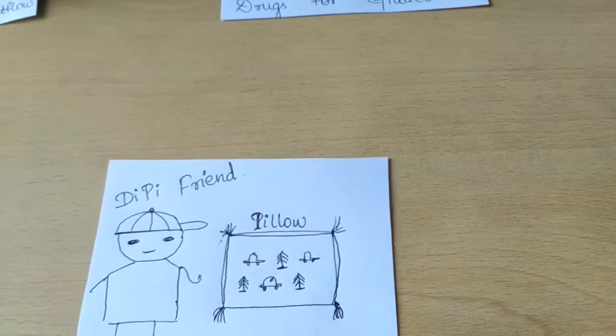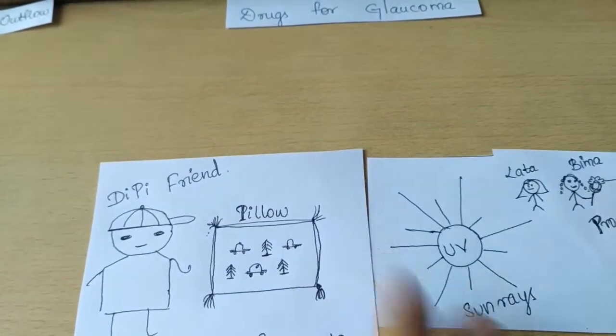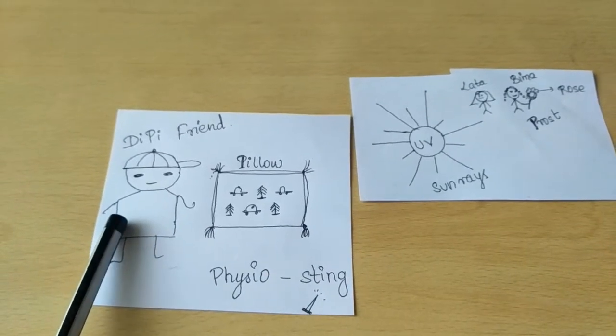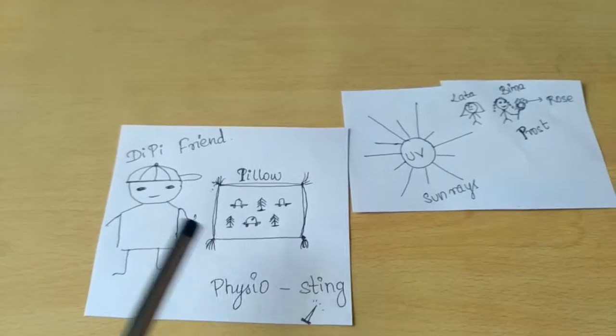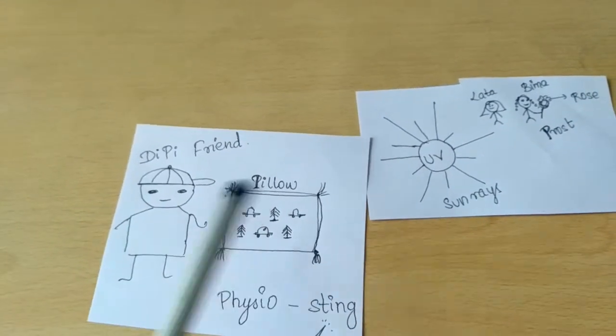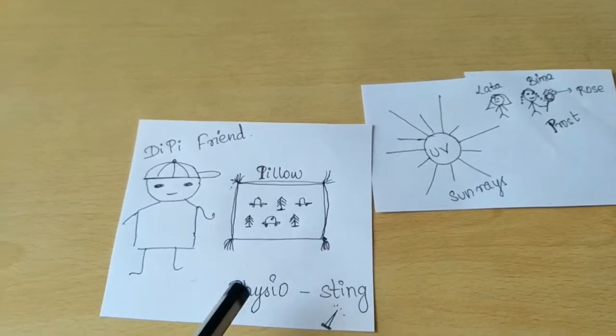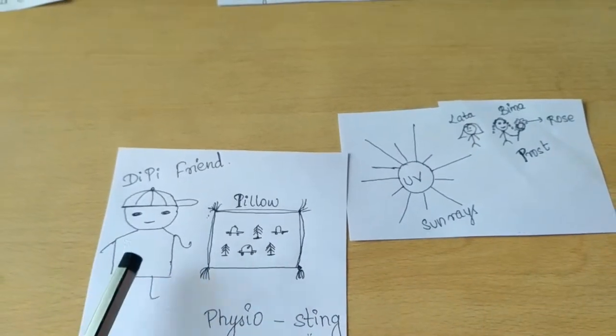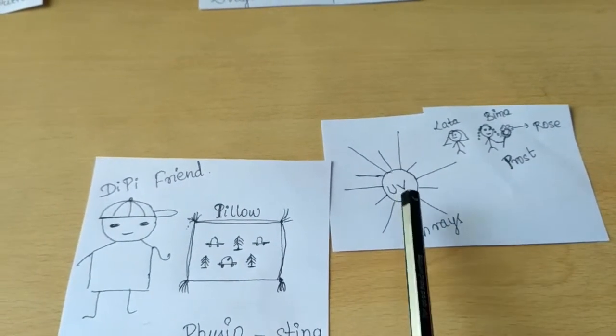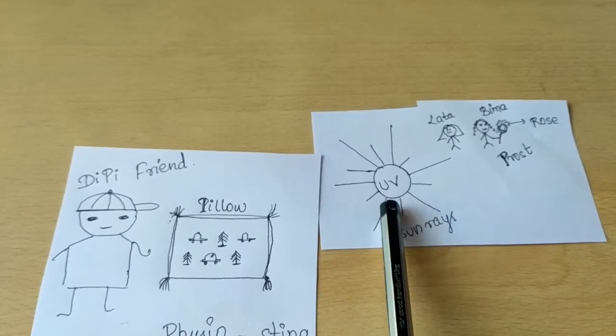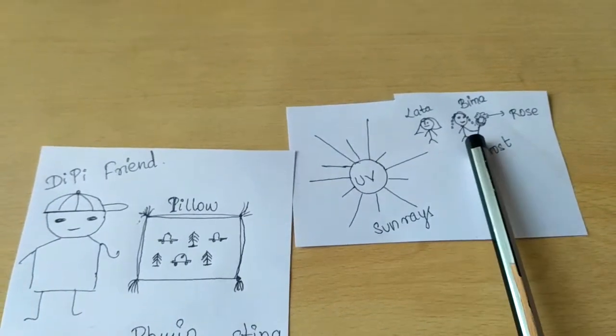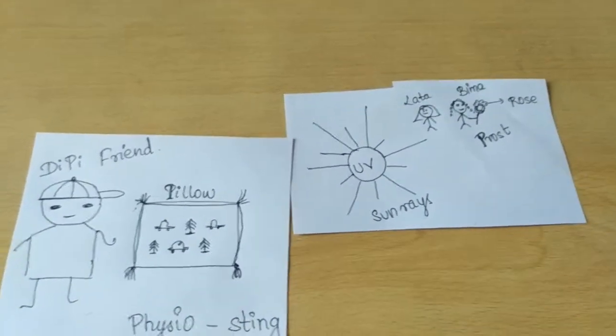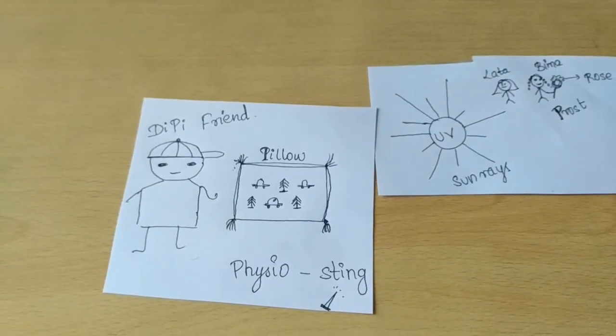For remembering the drugs, we have to see these two pictures. Here is a boy who's your friend, and his name is Dippy. His eyes constrict on seeing a pillow which has a car and pine trees on it. His eyes also constrict during physio exercise because physio stings. But he can work only when there are enough UV rays or UV sun rays. The UV sun rays are governed by two girls, Lata and Bhima, who stay there as a PG, as a paying guest, and they carry a rose in their hands. So the drugs which increase the aqueous outflow are subclassified into two types.